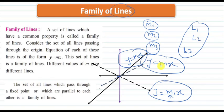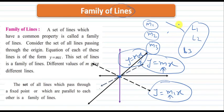Here the slope is different, so you cannot say these lines form a family of lines because their slope is equal — no, because here slope is not equal. But they are possessing a common property: they are all passing through the origin. So we can say that their intersecting point is the same. The second property is: if multiple lines are intersecting at a common point, then that set of lines is also called a family of lines.